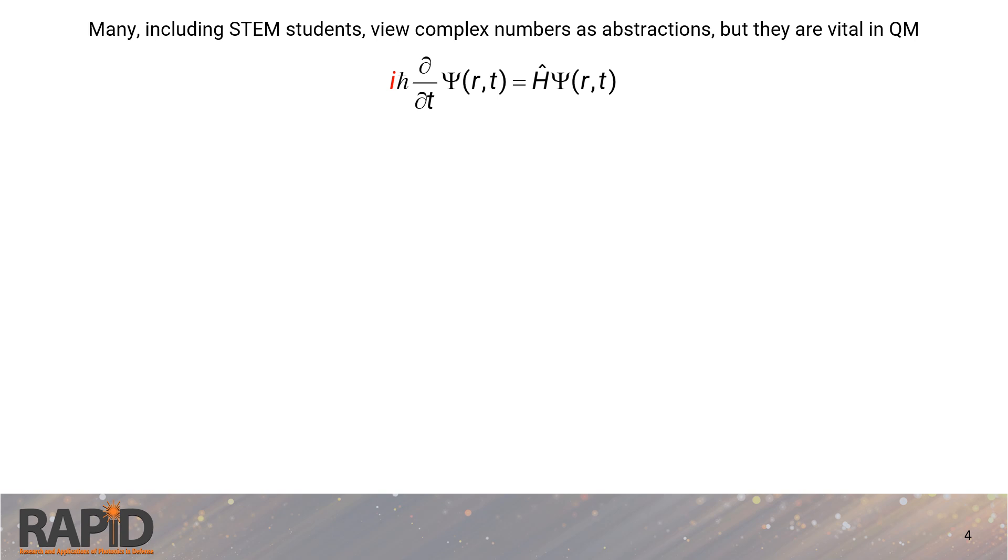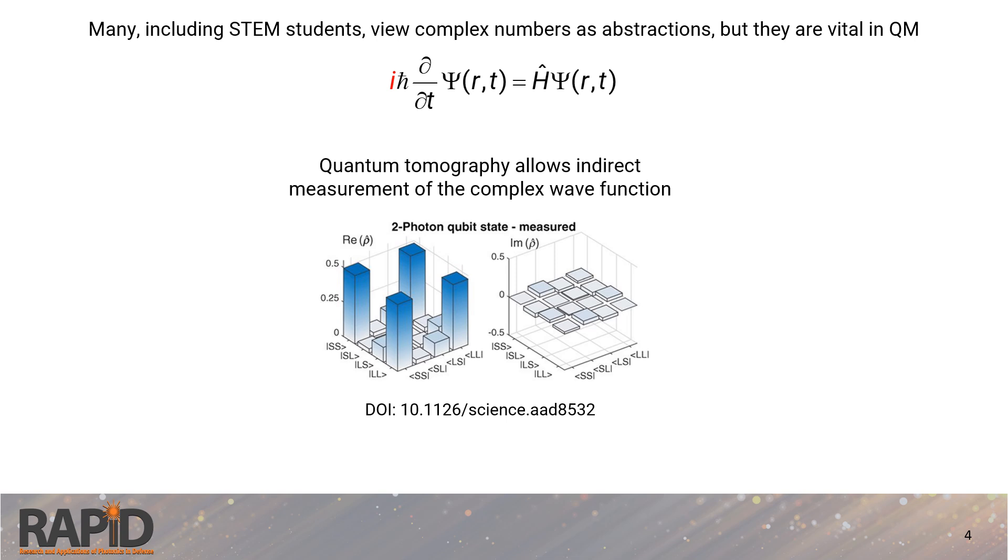Without the imaginary unit in this equation, the equation would be second order in time, requiring two initial conditions which isn't physically accurate in quantum mechanics. Moreover, quantum tomography today even allows us to indirectly measure the complex wave function, affirming its existence. So one can say, if you doubt the reality of complex numbers, try developing quantum theory without them.